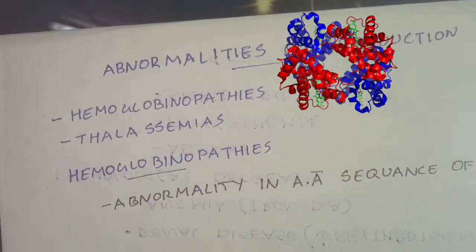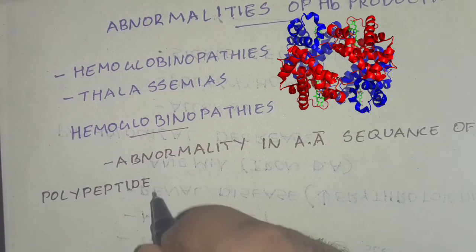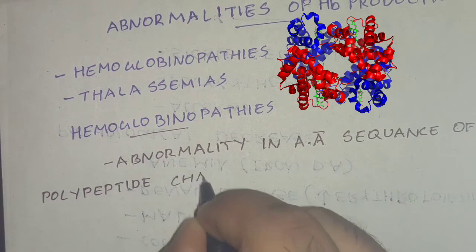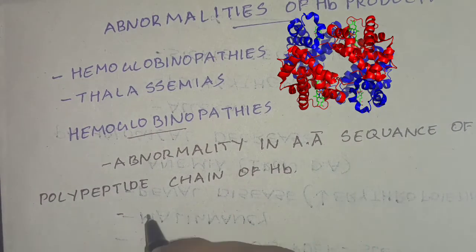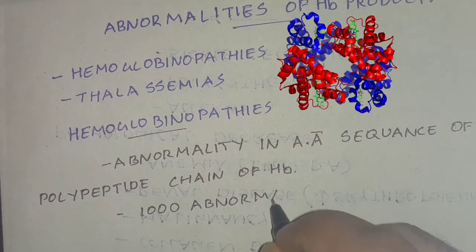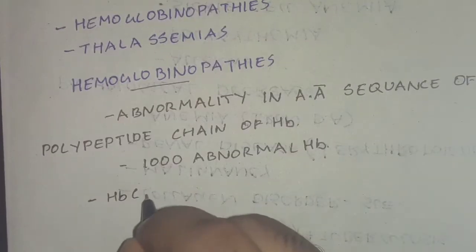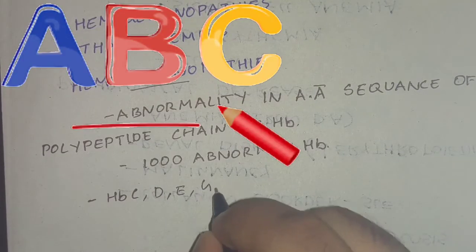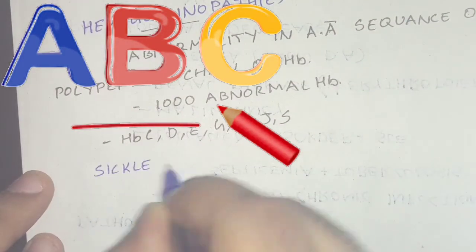About 1000 abnormal hemoglobins have been identified in man. Many of these abnormal hemoglobins are harmless. They are identified by letters — for example, hemoglobin C, D, E, G, I, J, S, etc.